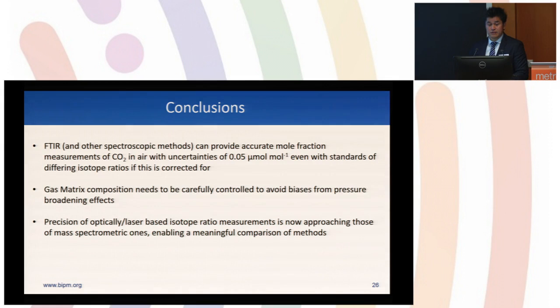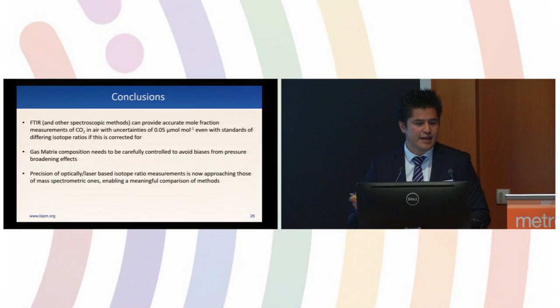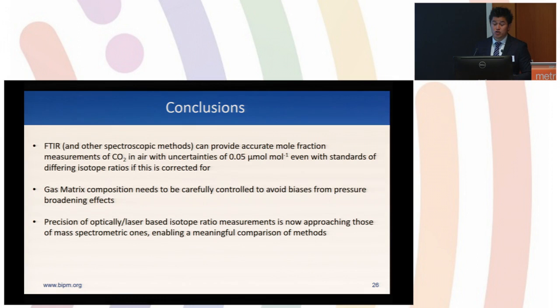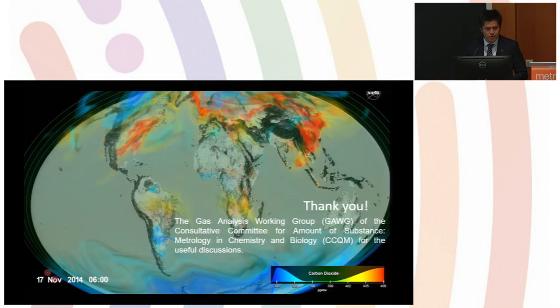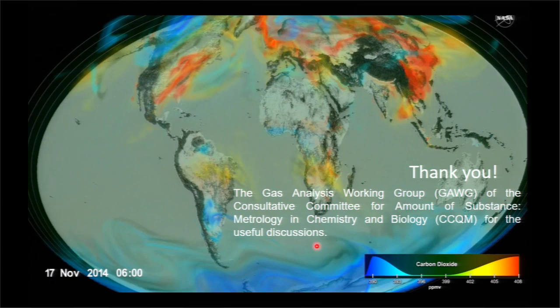In conclusion: FTIR and other spectroscopic methods can provide accurate mole fraction measurements of CO2 in air with uncertainties of 0.05 micromole per mole, even with standards of different isotopic ratios if corrected for. Gas matrix composition needs to be carefully controlled to avoid biases from pressure broadening effects. Finally, precision of optical laser-based isotopic ratio measurements is now approaching those of mass spectrometric ones, enabling a meaningful comparison of methods. Thank you very much, and I want to thank the Gas Analysis Working Group.